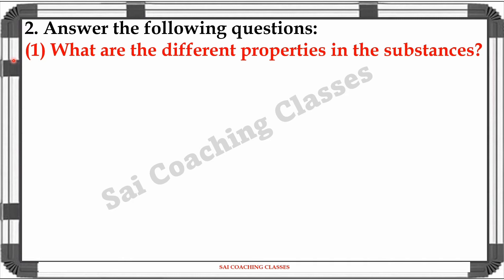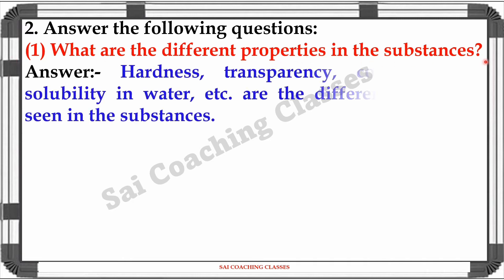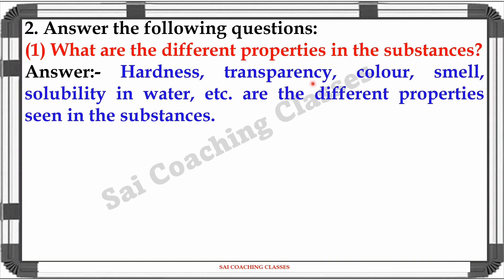Answer the following questions. First, what are the different properties seen in the substances? Answer: Hardness, transparency, color, smell, solubility in water, etc. are the different properties seen in substances.